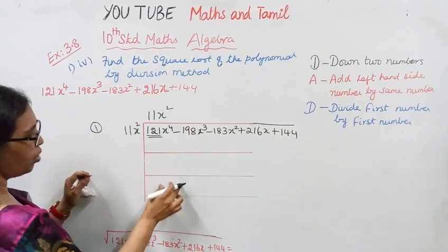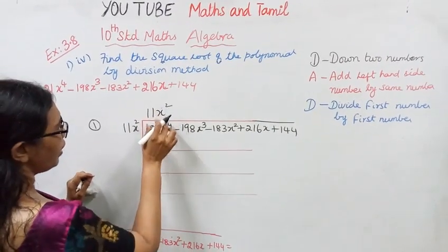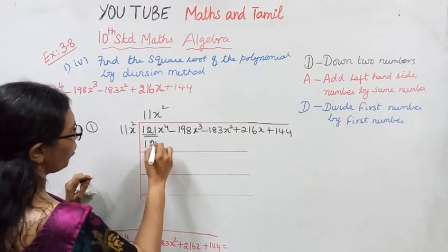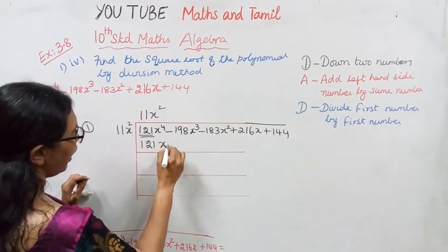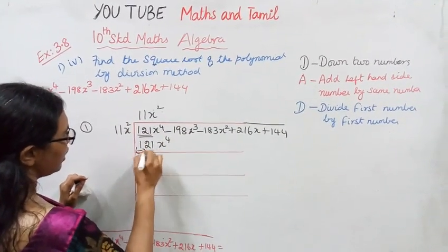11x² times 11 is 121. x² times x² is x⁴. Sign change, then cancel.